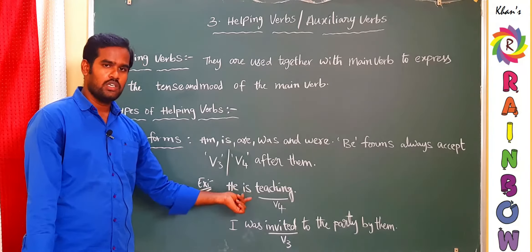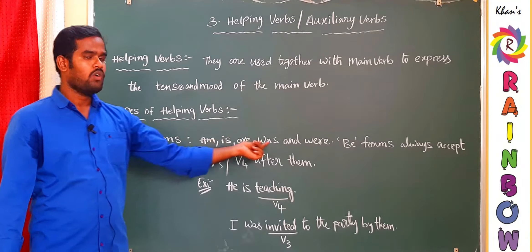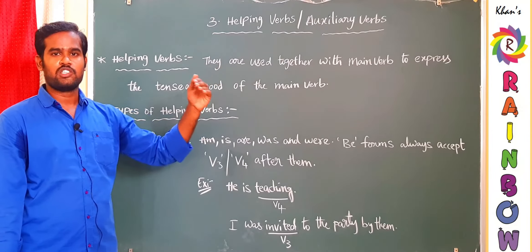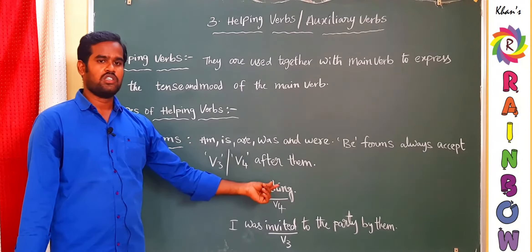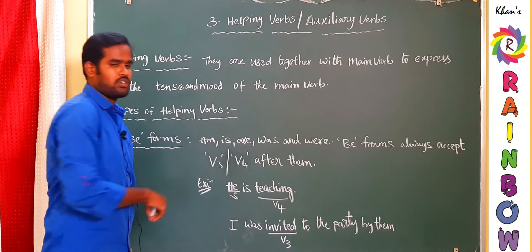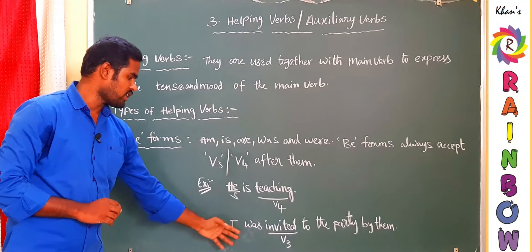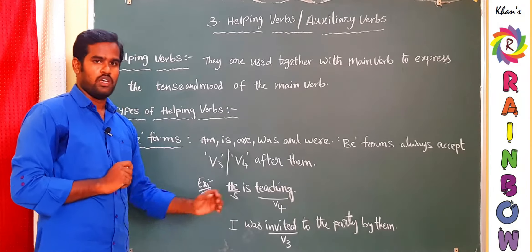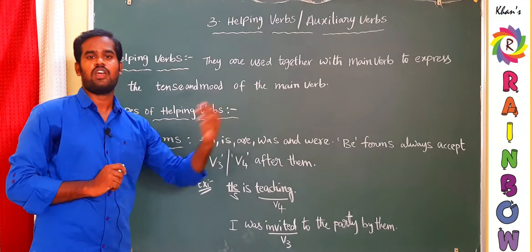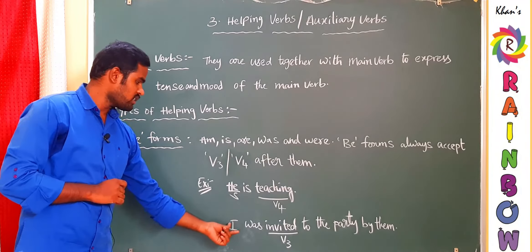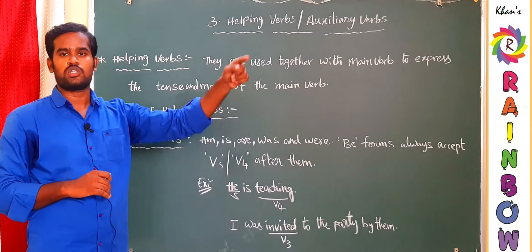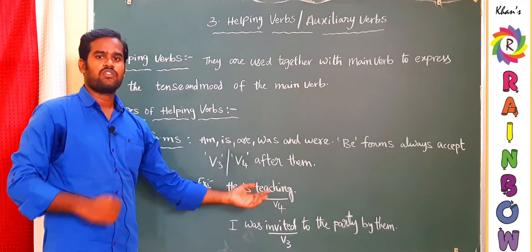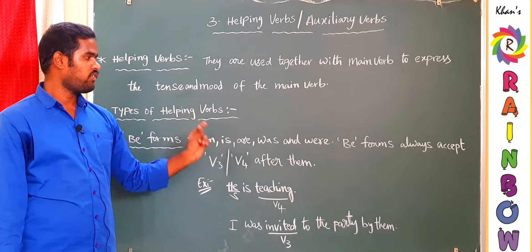Both 'is' and 'was' are B-forms. The second example is 'I was invited to the party.' I didn't invite anybody — I was invited by somebody. So it is passive mode. In the first statement the subject is doing the action; in the second, the subject received the action. The rule: if the statement is active use V4; if the statement is passive use V3.